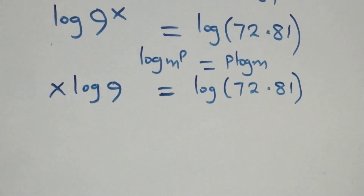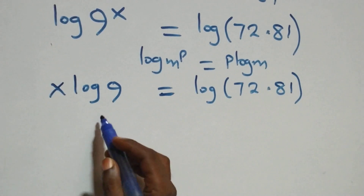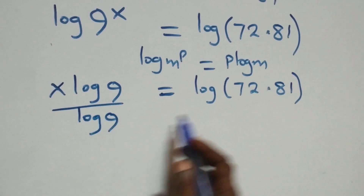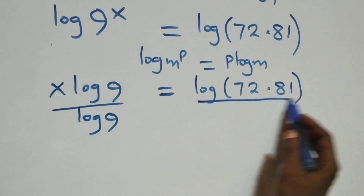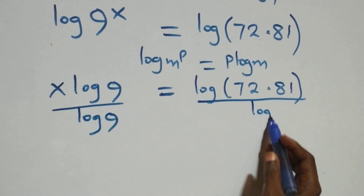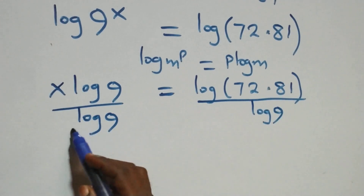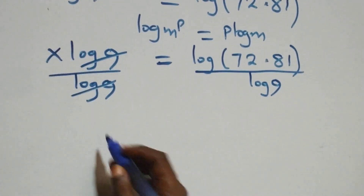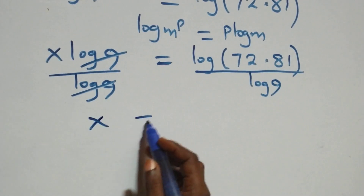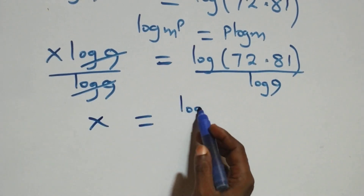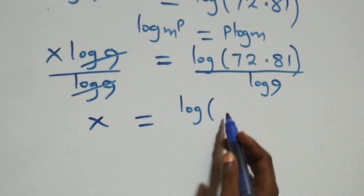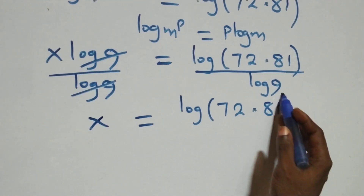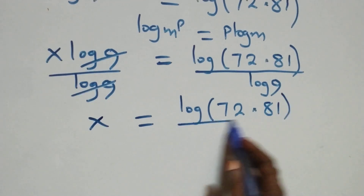We divide both sides by log nine. Log nine cancels on the left side, and we have x left, which equals log 72 times 81 over log nine.